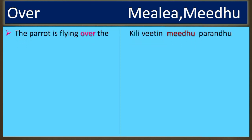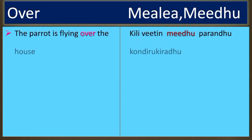The first example is: 'The parrot is flying over the house.' In Tamil: Killi wheat in meadu parandu kondi irikki radu. Killi means the parrot, wheat in meadu means 'over the house', and parandu kondi irikki radu means 'is flying'.